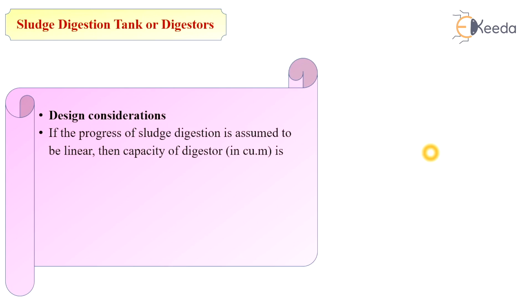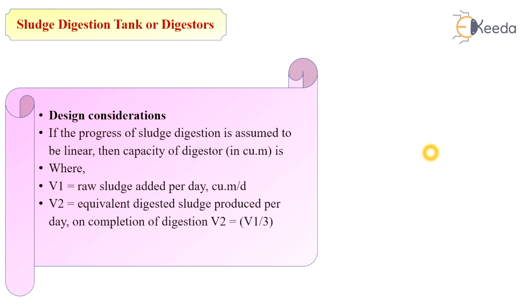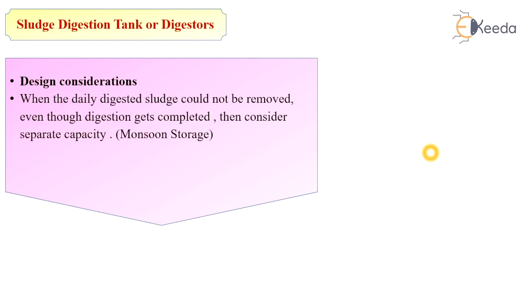If the progress of sludge digestion is assumed to be linear, then the capacity of the digester in cubic meters is calculated as follows: V1 is the raw sludge added per day in cubic meters per day, and V2 is the equivalent digested sludge produced per day on completion of digestion, where V2 equals V1 divided by 3. T is the digestion period in days. When the daily digested sludge cannot be removed even though digestion is complete, total capacity is calculated as V = (V1 + V2)/2 × t + V2 × T.